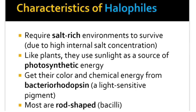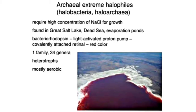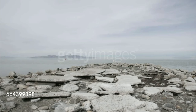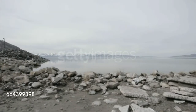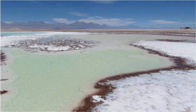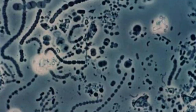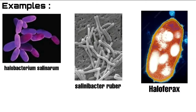Halophiles are salt-loving Archaebacteria. They require high NaCl concentration — a maximum of 1.5 moles and an optimum of 3 to 4 moles of NaCl. They are primarily aerobic organisms and have carotenoids which give them a reddish color. These extreme halophiles live in solar salterns, marshy lagoons, salt mines, and hyper-alkaline lakes and rivers.